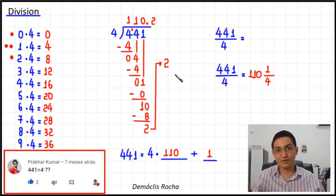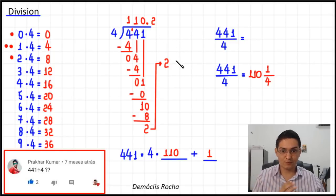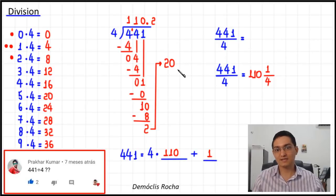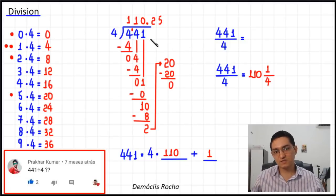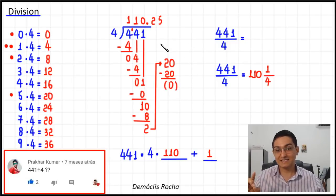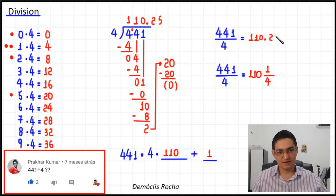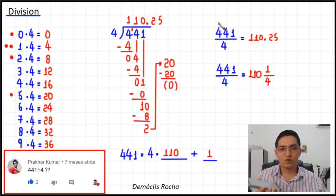After the subtraction, since there are no visible digits to bring down, we bring down a zero. Now we have 20, and we ask: how many times does four go into 20 without going over? Five times four equals exactly 20, so the number is 5. I write 5 here, five times four equals 20 — I write it here, and then I subtract. Twenty minus twenty equals zero. The division is over, and the exact quotient when dividing 441 by four is 110.25.